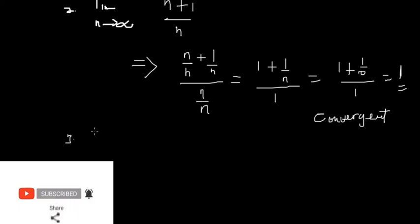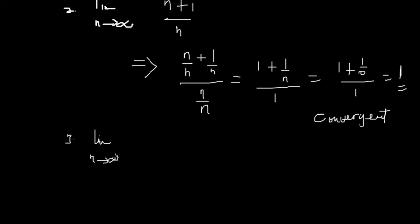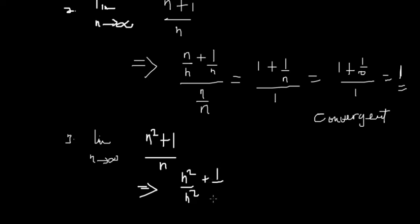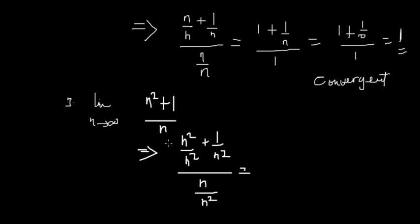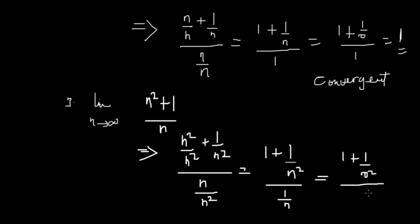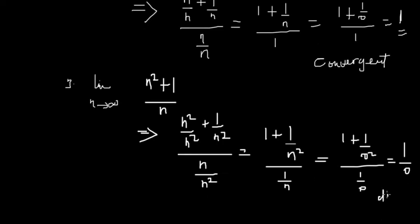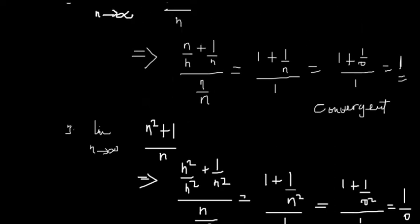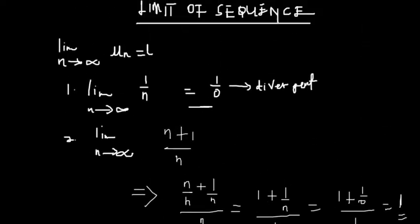Let's take the final example under limits of sequences. We have the limit as n approaches infinity of n²/(n²+1). Dividing through by the highest power n², we get (n²/n²) divided by (n²/n² + 1/n²), which gives 1/(1 + 1/n²). Substituting n with infinity: 1/n² → 0, so we have 1/(1 + 0). However, carrying through the computation yields 1 over zero, meaning this is a divergent sequence — it has no specific limit.